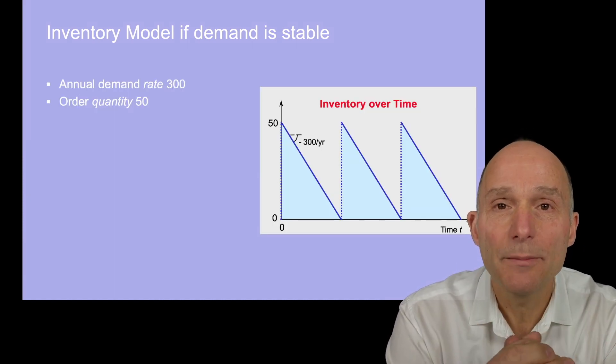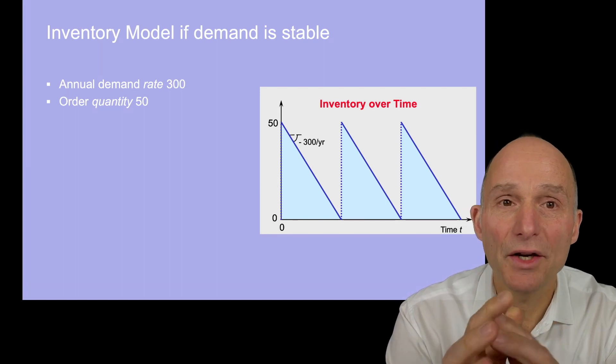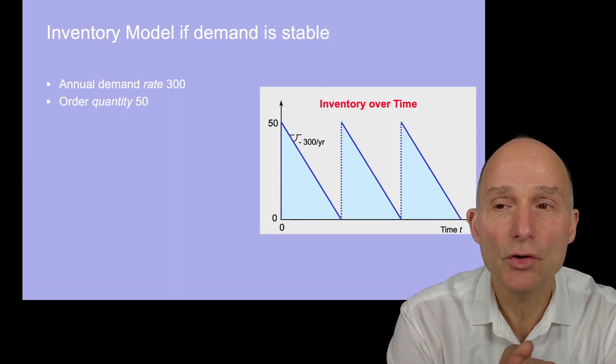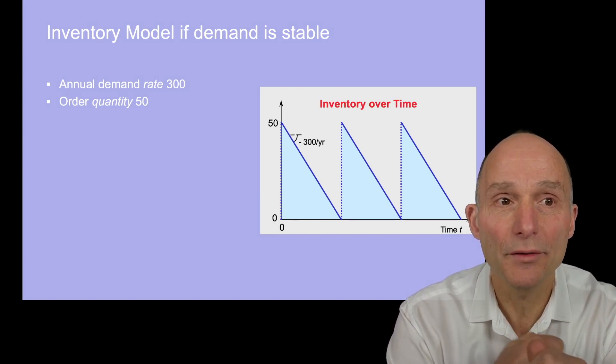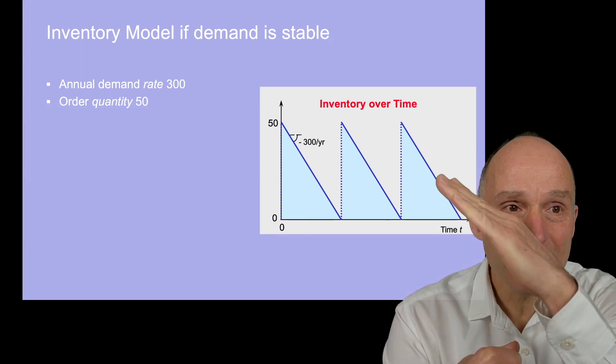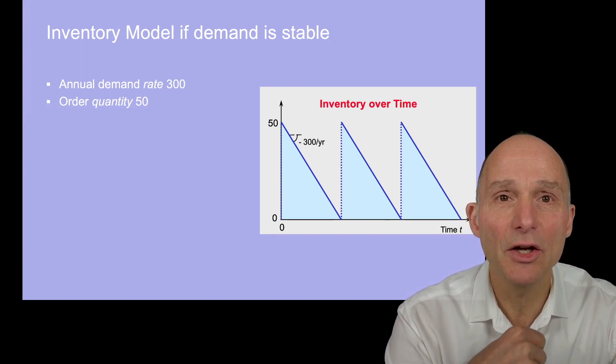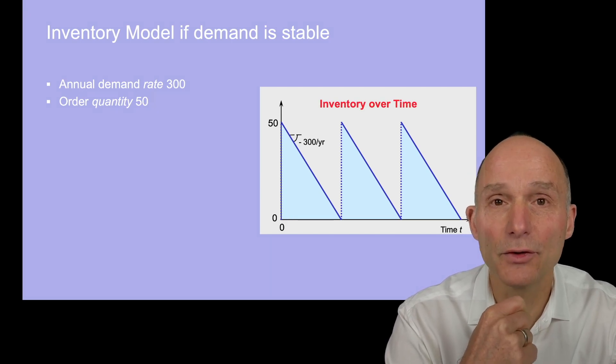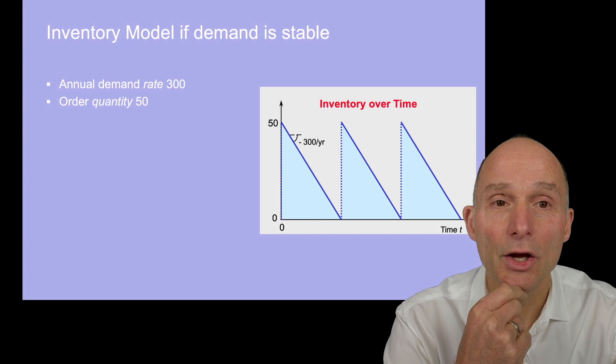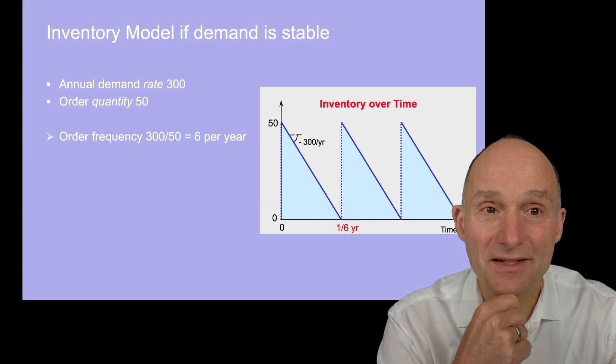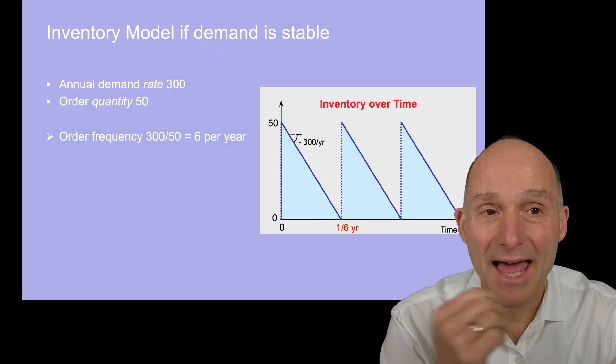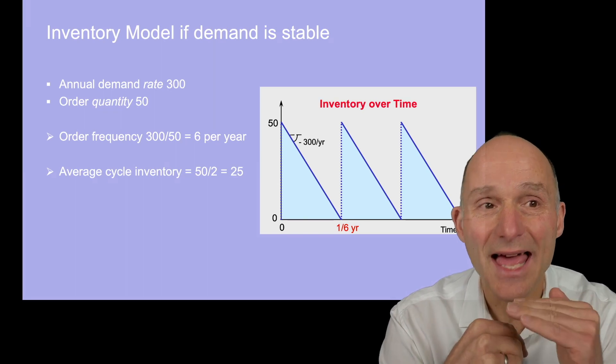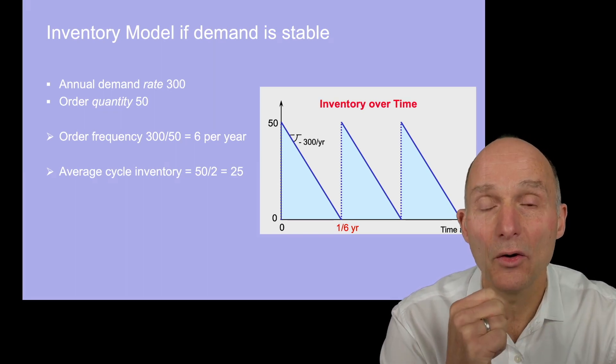With a constant demand rate of about 300 and a reorder quantity of 50, the inventory shoots up by 50 when an order is received and depletes at a constant rate of about 300 per year, and we indeed get a perfect triangular inventory pattern, similar to the real data. The order frequency is six per year, and the average cycle inventory is half the height of the triangles, or 25.